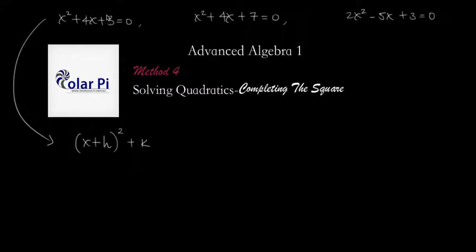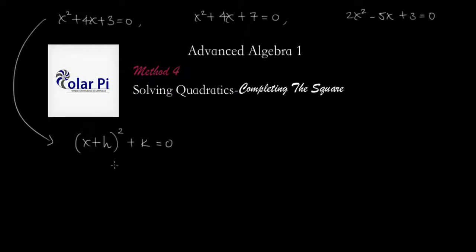We take the standard form and write it in vertex form. When we have done so, we will have finished the process of completing the square. But since our original quadratic is set to equal zero, once we get it in vertex form, we still want to set it equal to zero and then solve for x. Solving for x from here is guaranteed — once you're able to write your quadratic in vertex form, you just move k to the other side and take the square root of both sides.